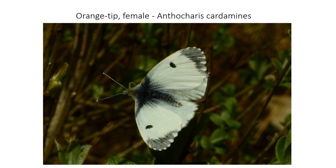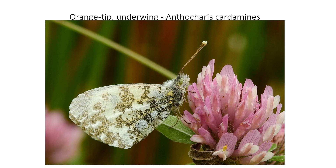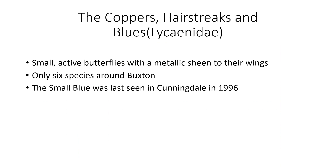The orange tips are quite distinctive. There's a lot more black around the margin of the wing and more suffused black around the thorax as well. This is a female — the males are even more distinctive with those bright orange tips. This is the butterfly on its food plant, the cuckoo flower. They're early summer butterflies; you don't see them later on in the year. The underwing of the orange tip has a very distinctive pattern.